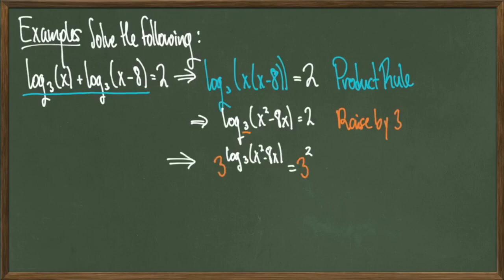This gives us 3^(log₃(x² - 8x)) = 3². And you simplify this whole equation to get the quadratic x² - 8x - 9 = 0.